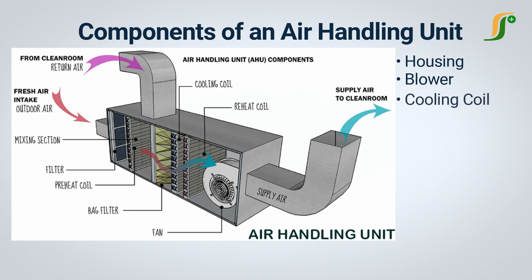Cooling coils present in the AHU cool and dehumidify the air. Chillers generate cold water, and this cold water is circulated by pumps through these coils. Like cooling coils, hot water circulates in heating coils. Hot water is generated by steam or by electric heaters.